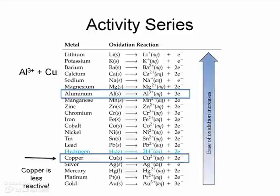So if we look at our activity series table, we see that copper metal is far below aluminum ions on the table. And so we see that copper is less reactive than aluminum, and in fact, this reaction cannot proceed.